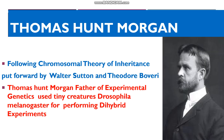Following the Chromosomal Theory of Inheritance put forward by Sutton and Bovery, in 1907 Thomas Hunt Morgan — T.H. Morgan — the father of experimental genetics, used the fruit fly Drosophila melanogaster for performing dihybrid experiments.